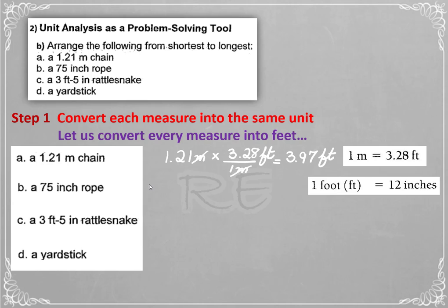1 foot is equal to 12 inches. To convert 75 inches into feet, we are going to multiply 75 by 1 foot over 12 inches. Inches cancel. So 75 divided by 12 will give you 6.25 feet.